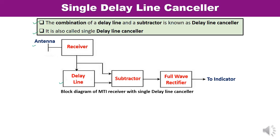An antenna is used here. Whatever signal is transmitted, the partial portion reflected by the target is received by the receiving antenna. In the receiver stage, you can see a receiver, delay line, subtractor, and full wave rectifier. The output of the MTI radar is given to the delay line canceler, where the input signal is converted to its equivalent digital value by an analog-to-digital converter. One portion of the signal is directly applied to the subtractor, and the second is delayed using the delay line — achieved by storing the radar output during pulse transmission.